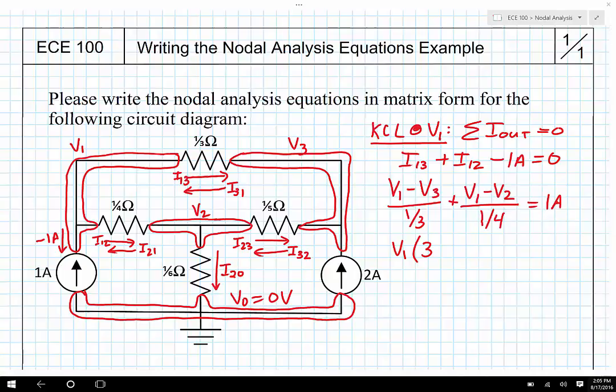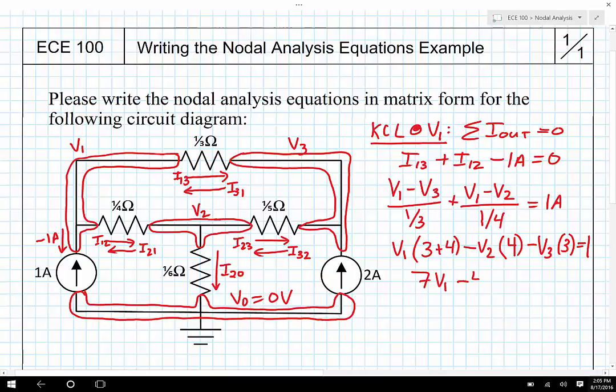And then I'm going to have minus V2 multiplied by one over one fourth, which is four, minus V3 times one over one third, which is three, and that's equal to one. Or I could write that as seven V1 minus four V2 minus three V3 equals one, and I'm going to call that equation number one.